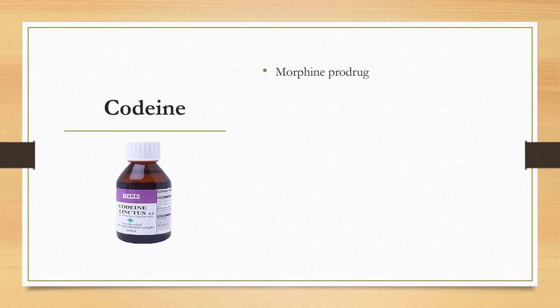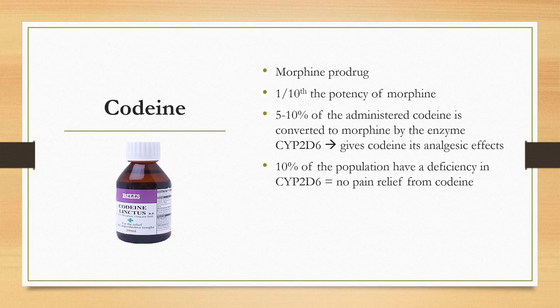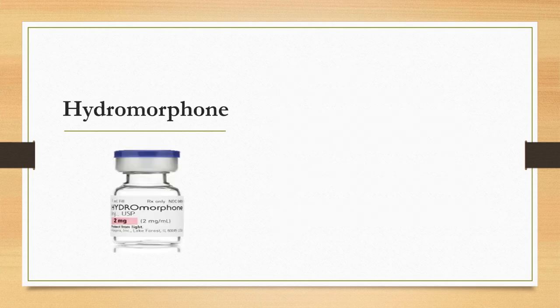Codeine is a prodrug of morphine — an inactive drug that must be metabolized to an active drug — and is one-tenth the potency of morphine when administered orally. Five to ten percent of the codeine dose is converted to active morphine via the CYP2D6 enzyme. Interestingly, 10% of the population lacks this enzyme and gets no pain relief from codeine. Codeine is known for great antitussive effects and in combination with acetaminophen is often of great benefit in transitioning from the PACU to a lower level of care.